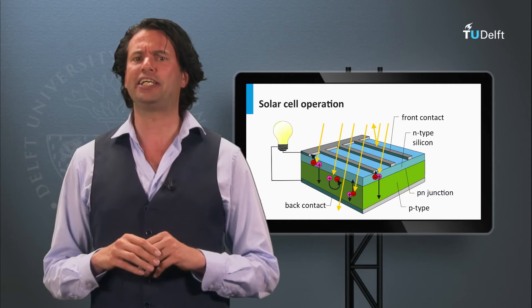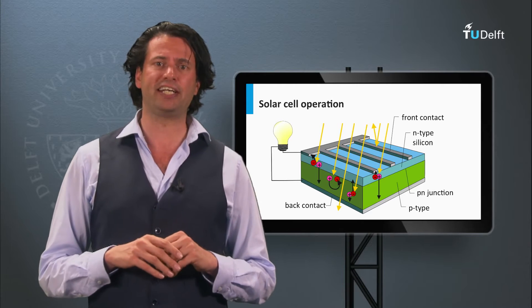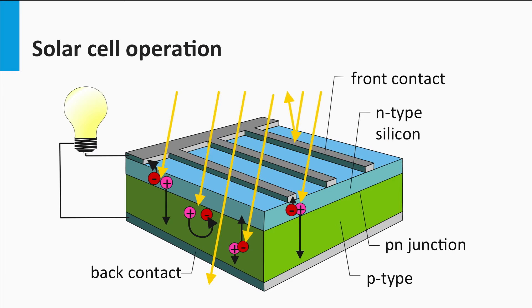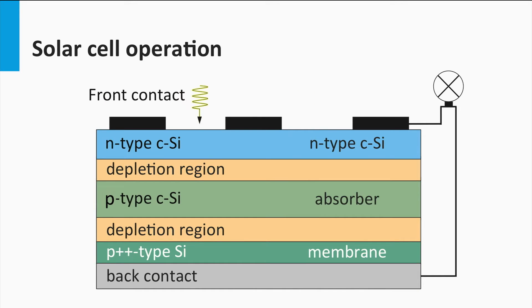Here we see a simplified representation of a silicon-based solar cell. It consists of the crystalline silicon absorber layer, a p-n junction to separate the light-excited charge carriers, and a metal front and back contact. Here we see the same structure, but then in a cross-sectional view.